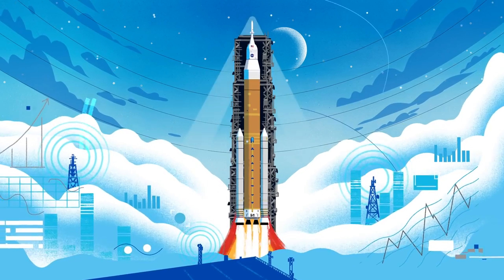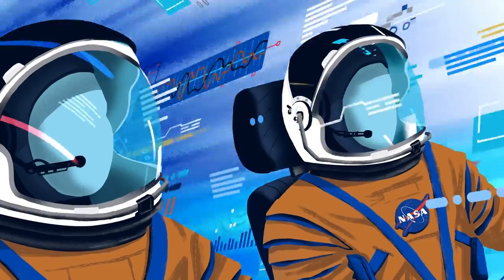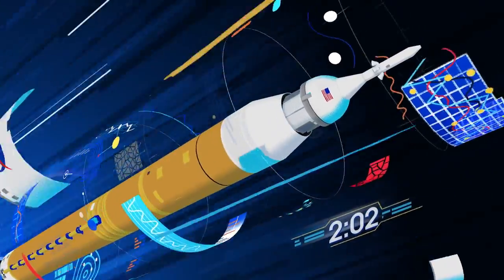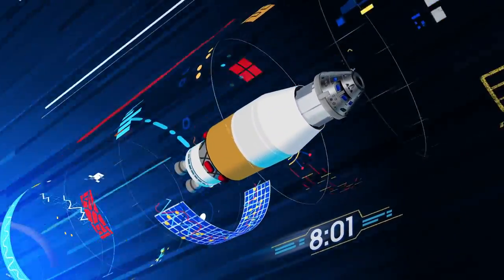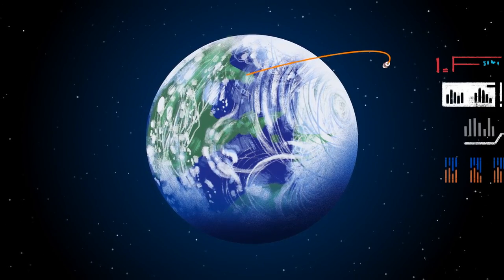All four RS-25 engines and the two solid rocket boosters come to life, thundering our crew upwards. Two minutes after ignition, the solid rocket boosters are spent and released. Eight minutes after launch, the core stage is depleted and separated. The upper stage fires briefly, placing Orion into a parking orbit around the Earth.